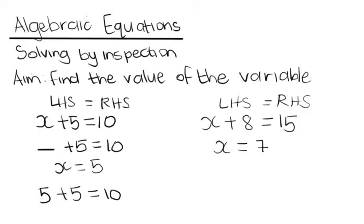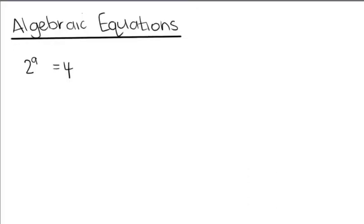Let's do another example. This is our next example. I have 2 to the power of a is equal to 4. Remember, I told you that the variable doesn't always have to be x. It can be any letter of the alphabet.